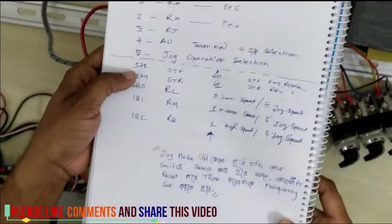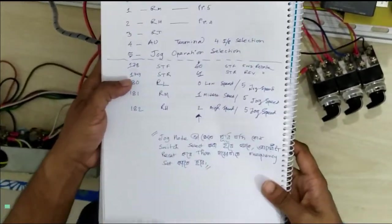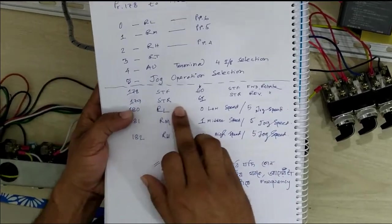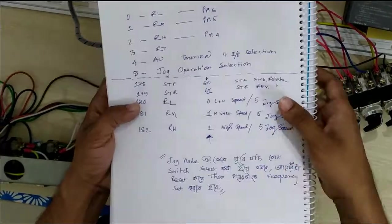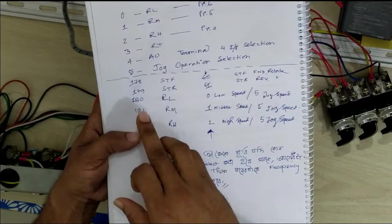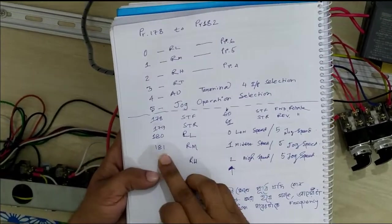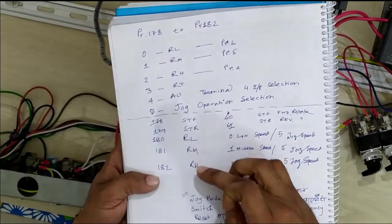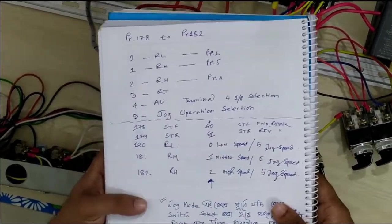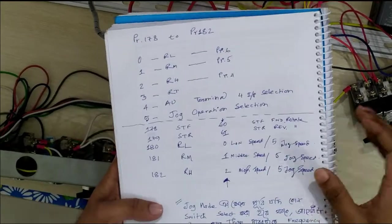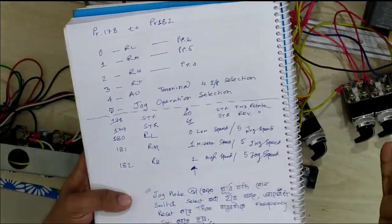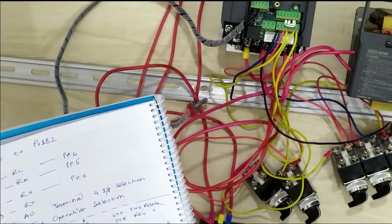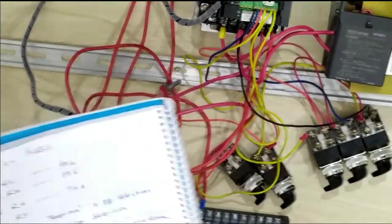Parameter 178 of Mitsubishi VFD is STF, that means forward. Parameter 179 is STR, which is reverse rotation. Parameters 180, 181, and 182 are RL, RM, and RH - these three represent low, medium, and high fixed frequencies. You can select any of these externally to set your jog mode with a fixed frequency.